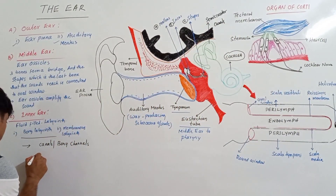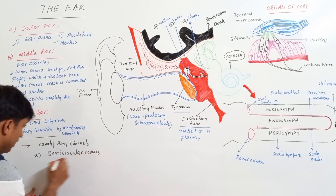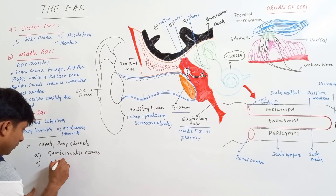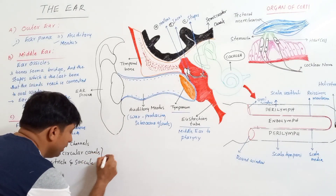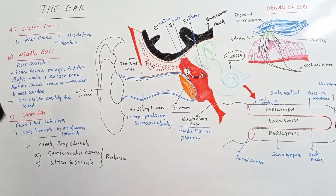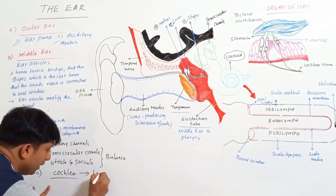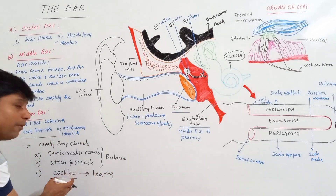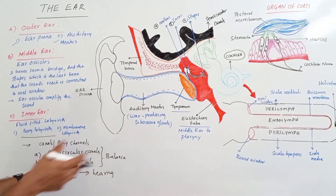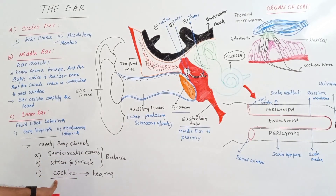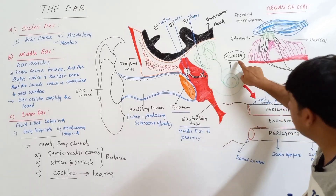In the inner ear there are semicircular canals, and utricle and saccule, which are the organs for balance. These are together called the vestibular organs. The cochlea is the actual organ of hearing. The coiled part of the bony labyrinth is the cochlea — it is a coiled structure that resembles the shell of a snail.